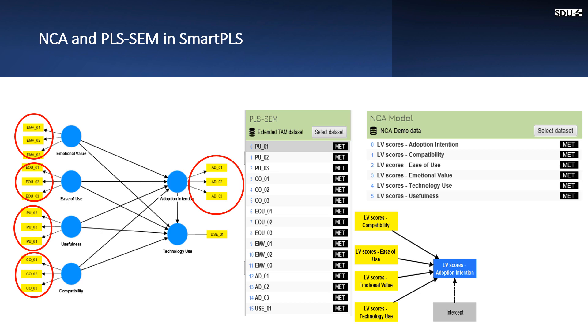For example, here in this case, we are trying to test the necessity association between four conditions and one outcome. The necessity association found between one of the conditions and the outcome, for example, the ease of use, between ease of use and the adoption intention does not depend on the other conditions. So you can add as many conditions here as you want, but they will not affect the necessity association between the ease of use and the adoption intention.